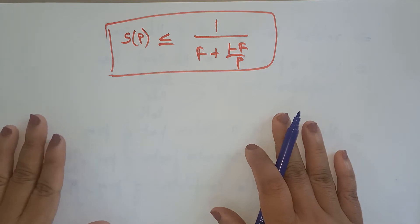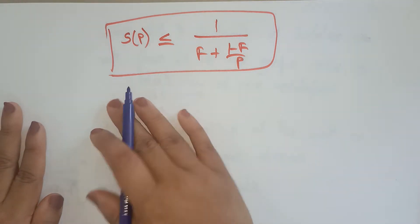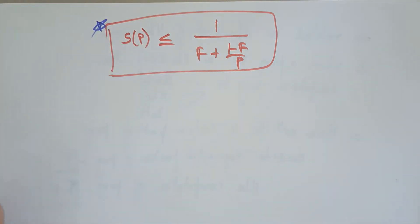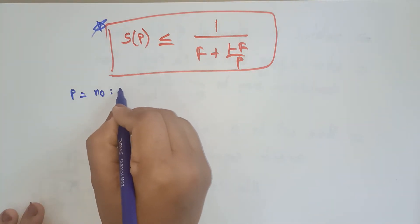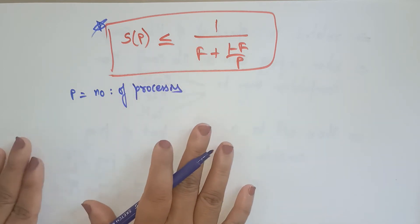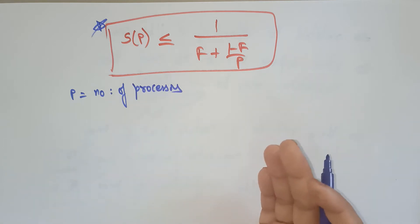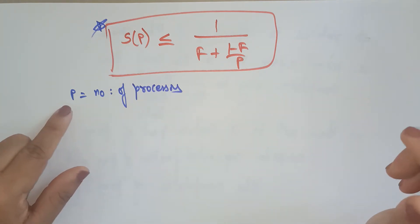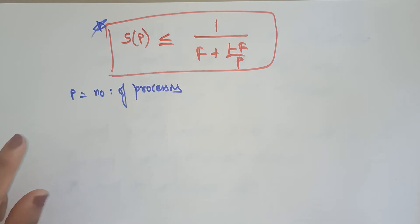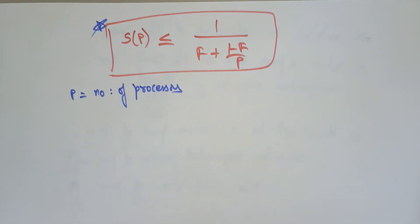This is the formula for Amdahl's Law — the speed-up of a parallel computer. Let's see how we are getting this formula. Let P be the number of processors. Because this is a parallel computer, Amdahl's Law works with parallel computers, but it can also apply to serial or sequential. Let's prove this relation.